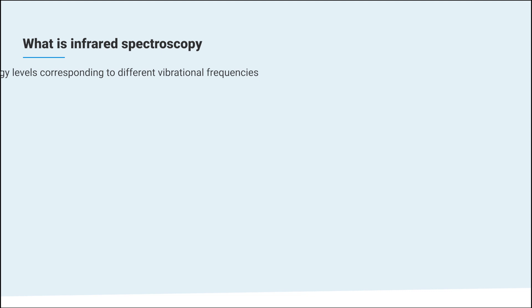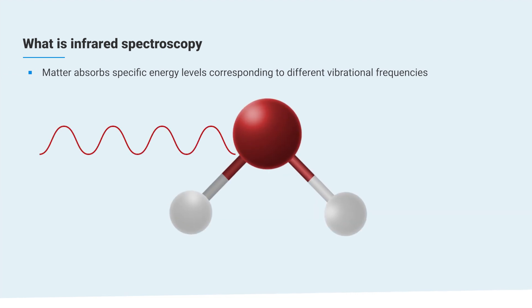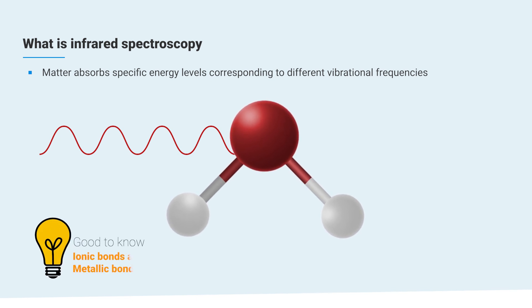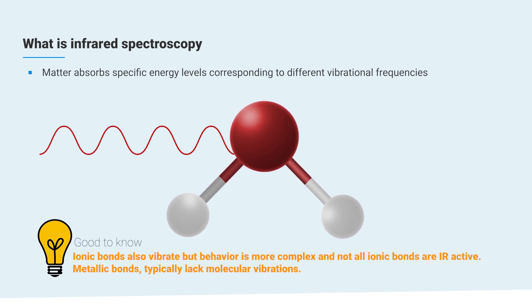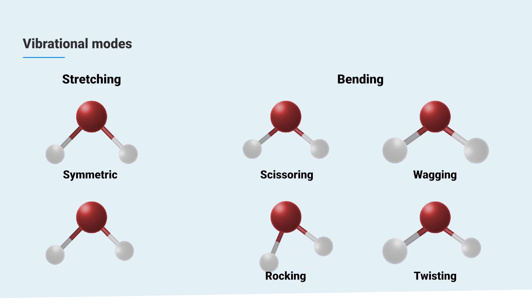Infrared spectroscopy is based on the principle that matter absorbs specific energy levels corresponding to different vibrational frequencies, also called modes, producing distinct spectral signatures. There are two primary types of vibrations for a covalent bond: stretching vibrations, where the bond oscillates back and forth, and bending vibrations, where the bond flexes up and down.